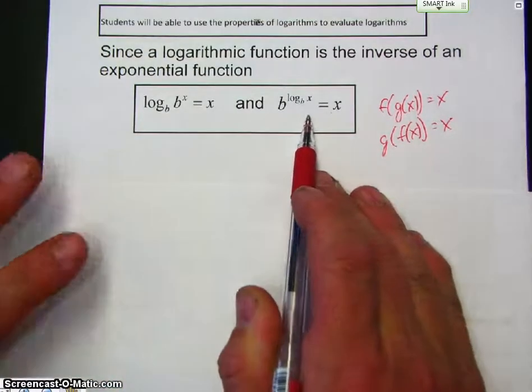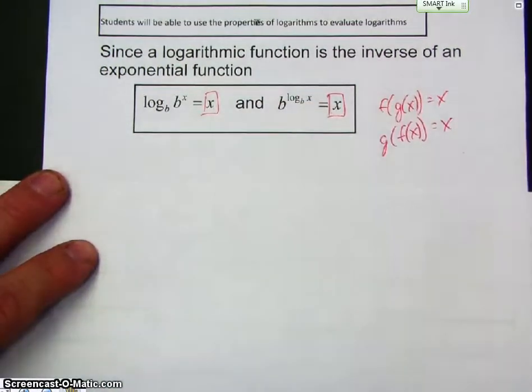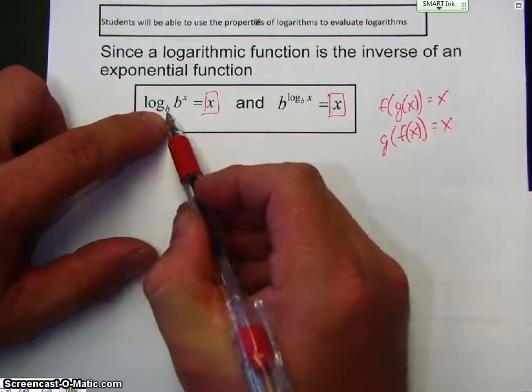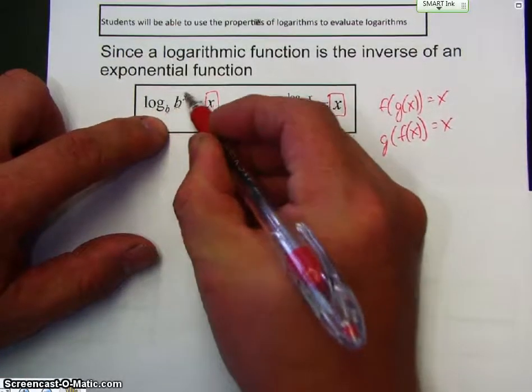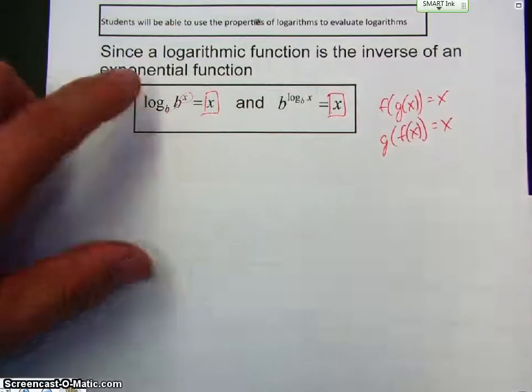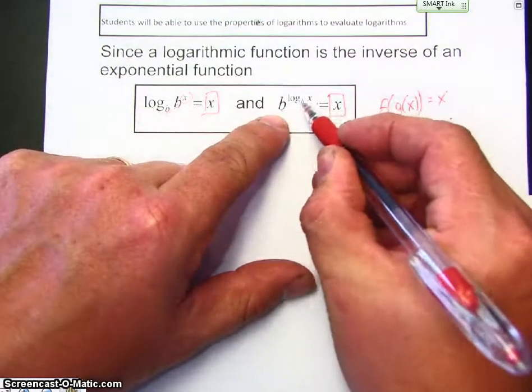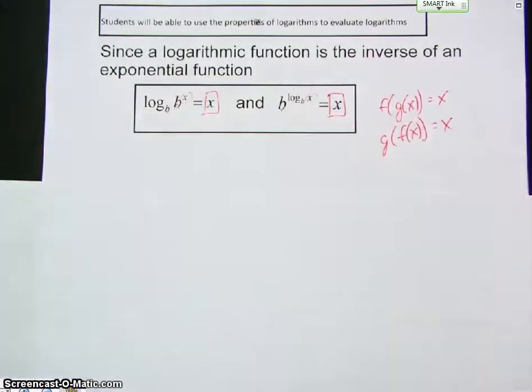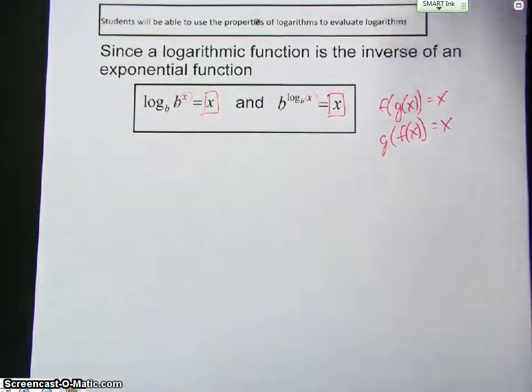So, in other words, our goal is to get x. If I take a log of some base, and this base, if these two are the same, then your answer is whatever the exponent is. If the base and the base of the log are the same, then whatever that is is equal to. A lot of terminology, a lot of variables. It's best if you just look at a couple of examples.